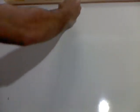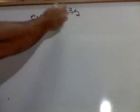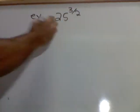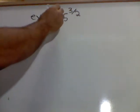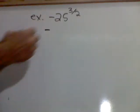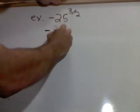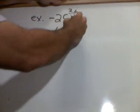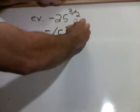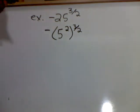Negative 25 to the 3 halves. This negative is not in parentheses, so it comes down. Now, can I rewrite 25 as some number to the second power? Yes, that would be 5 to the second power.